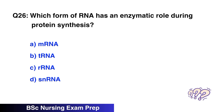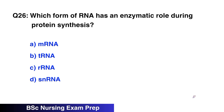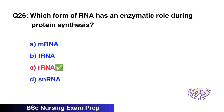Question number 26: Which form of RNA has an enzymatic role during protein synthesis? The right option is C, rRNA.